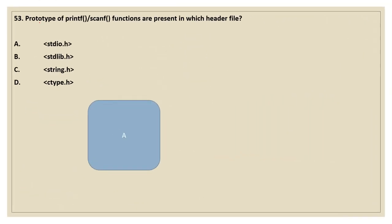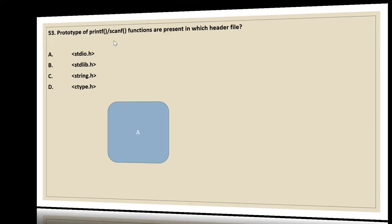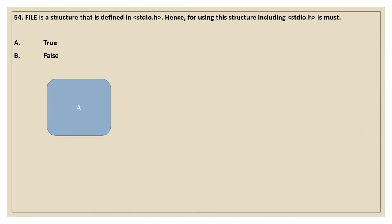Moving on to the 53rd question. The prototype of printf and scanf functions are present in which header file? stdio.h — standard input output header file — is the one that contains printf and scanf used for input and output in our C program. 54th question: FILE is a structure defined in stdio.h, hence for using the FILE structure, including stdio.h is a must. Yes, it is true — we have to include stdio.h for using the FILE structure in our code.